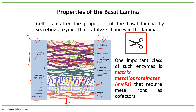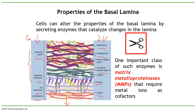MMPs are called 'metallo' because they require metal ions as a cofactor to act. In summary: the extracellular membrane has different components and specific proteins, all of which can be broken by MMPs. This diagram from a scientific article shows a tumor with MMPs expressed around it, allowing the tumor to migrate.